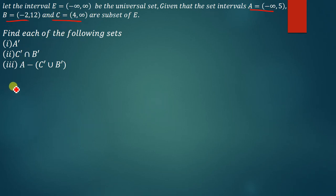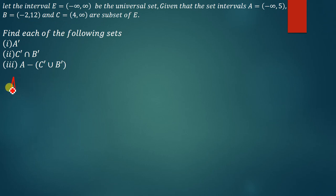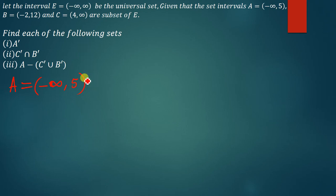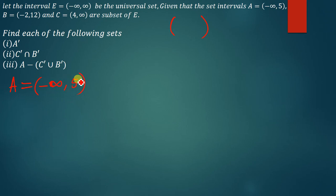They're asking us to find what A complement is. A complement is simply the elements that are not in A, but are in the universal set. A is from negative infinity up to 5. The key thing to understand is the kind of brackets being used. An open bracket means the number right before it is not part of the set. So numbers from negative infinity up to 5 are in A, but 5 itself is not part of set A.